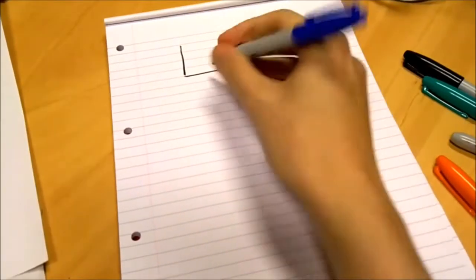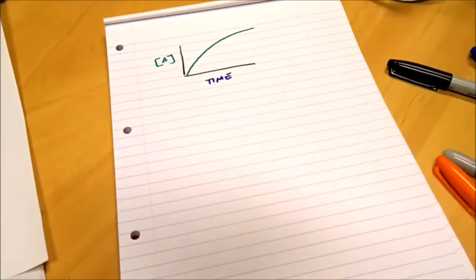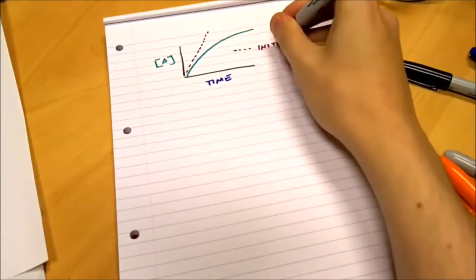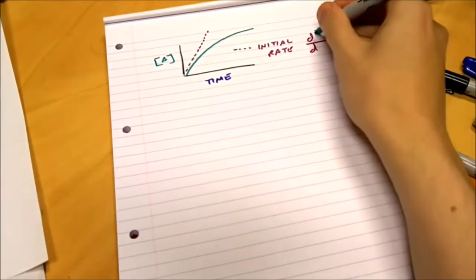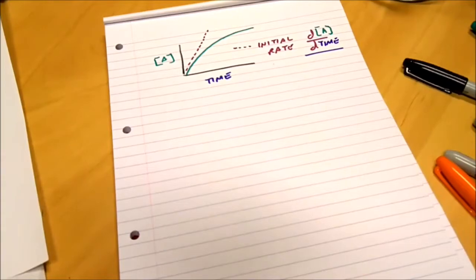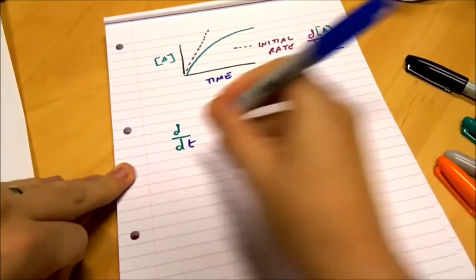Thirdly, and finally, you will be able to use the initial rates and pseudo-first-order methods to calculate reaction orders and rate constants. These methods, despite their odd-sounding names, are simpler than you might think.